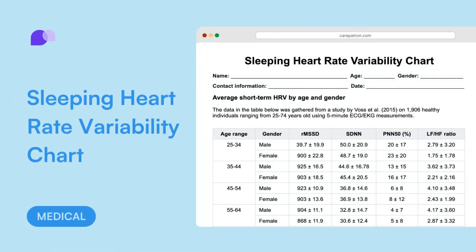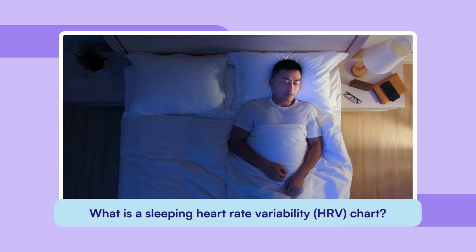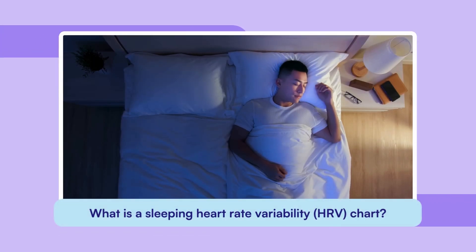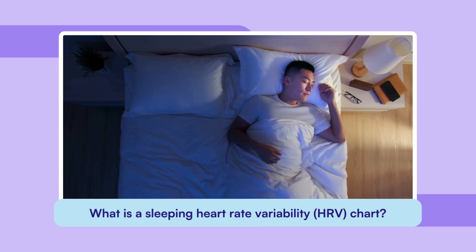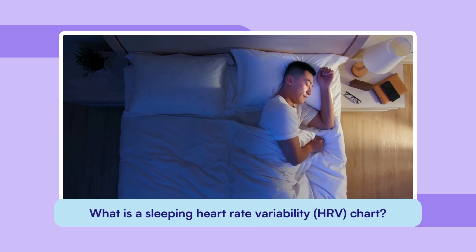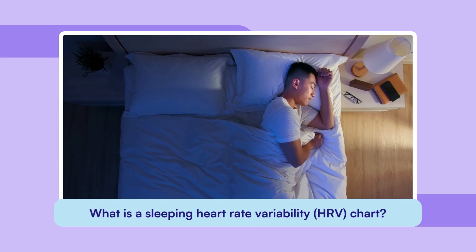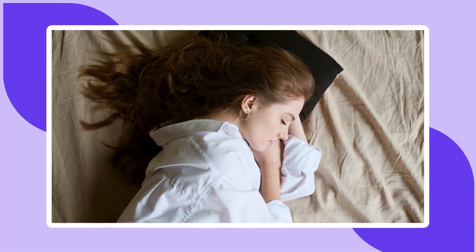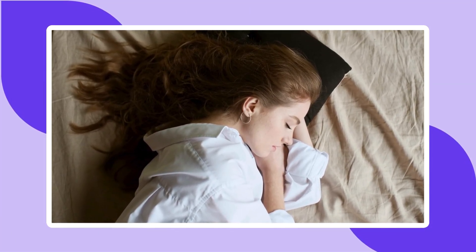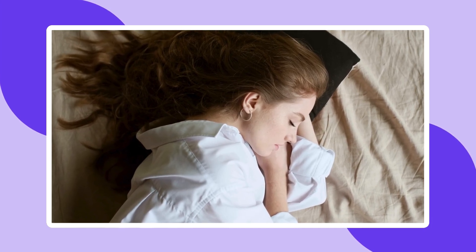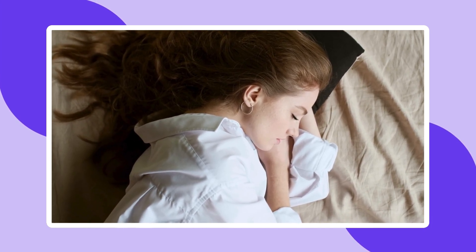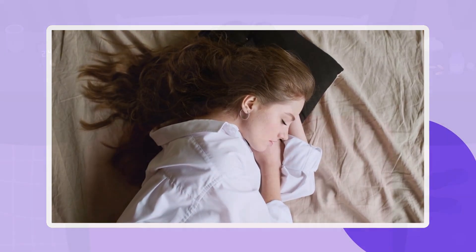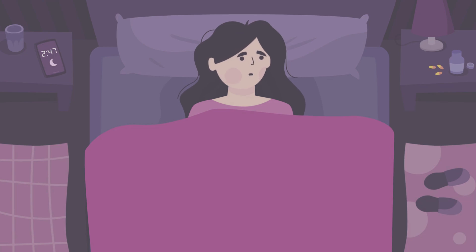A sleeping heart rate variability chart is an important tool for assessing sleep quality and identifying potential health issues. HRV measures the variation in time between heartbeats, offering insights into how well your autonomic nervous system is functioning. A higher HRV indicates a relaxed, adaptable heart and reflects a balanced nervous system, while a lower HRV may signal stress or strain on the heart.